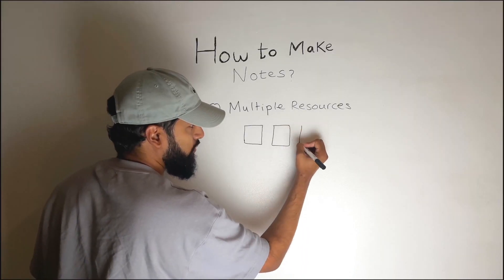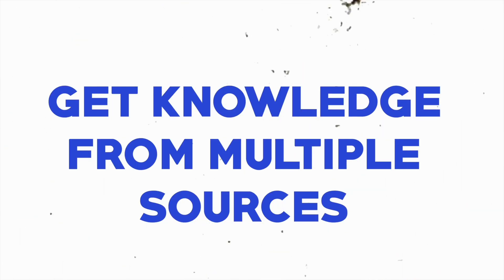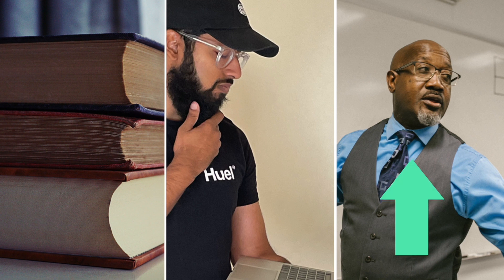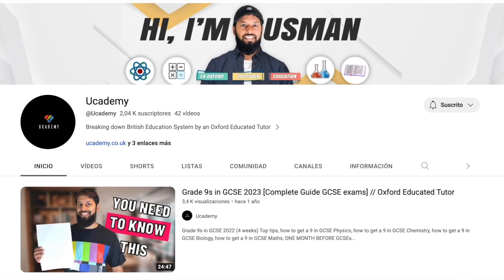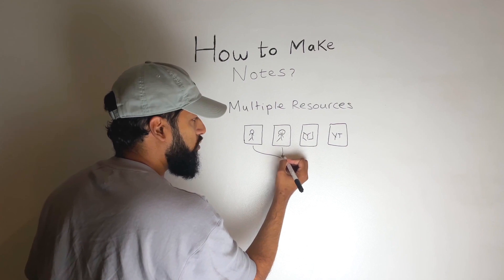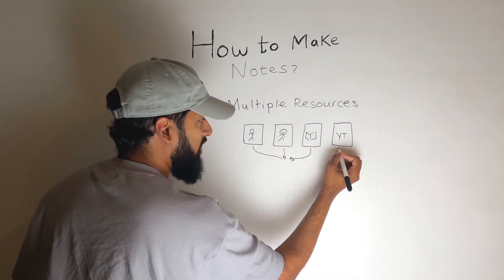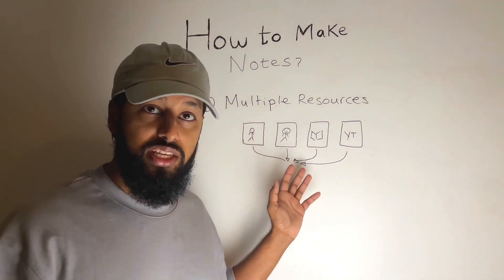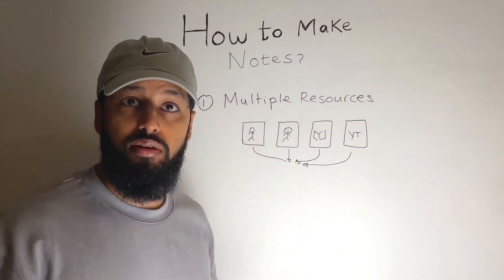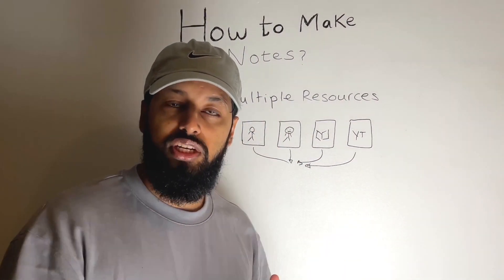So what we want to do is we want to get knowledge from multiple sources. So I don't want you to just learn from your school teacher or learn from me. I don't just want you to learn from a textbook. I don't just want you to learn from YouTube. I want you to use multiple different resources and once you look at all the different resources and you combine what they are saying, because I might be an expert at one thing but your textbook might be explaining another topic really well.